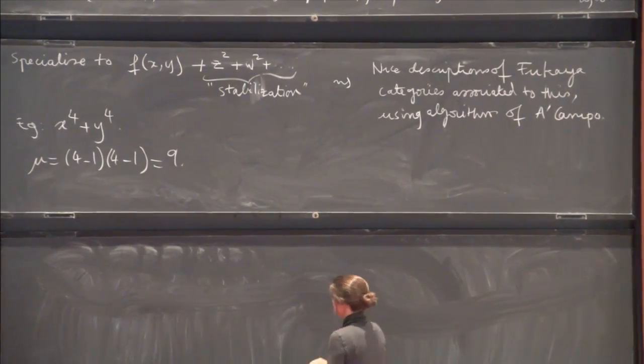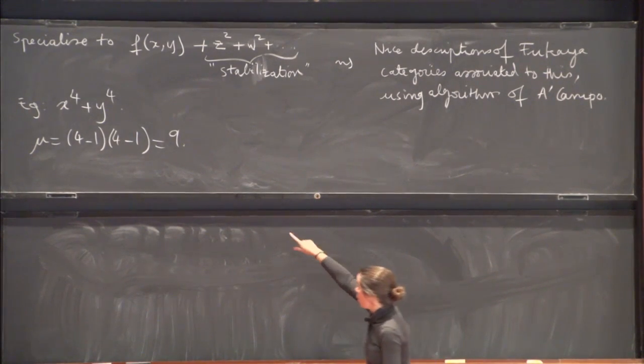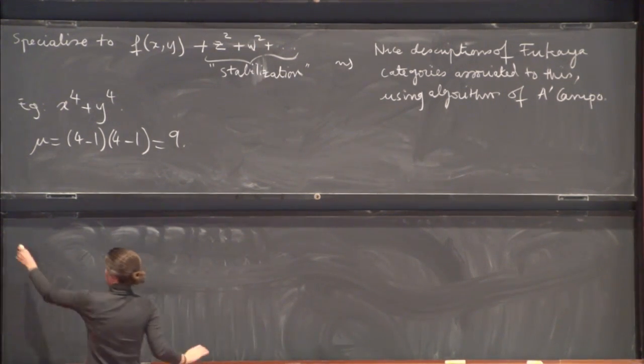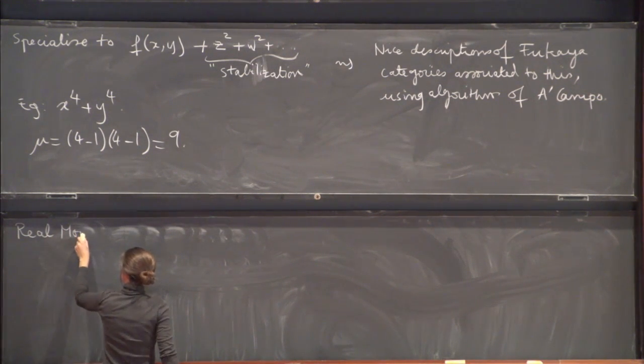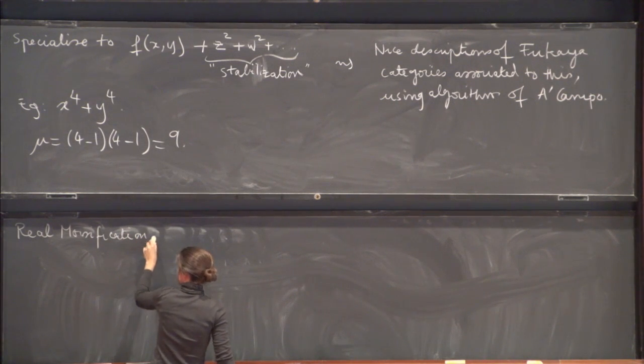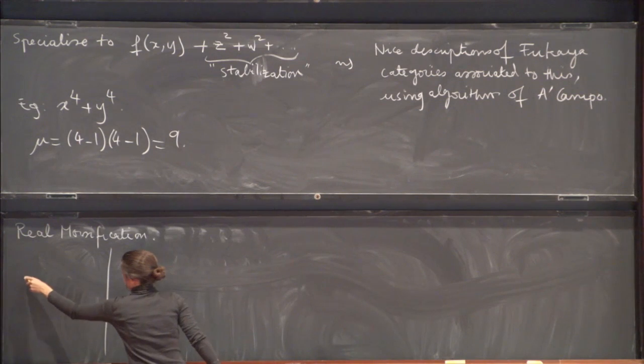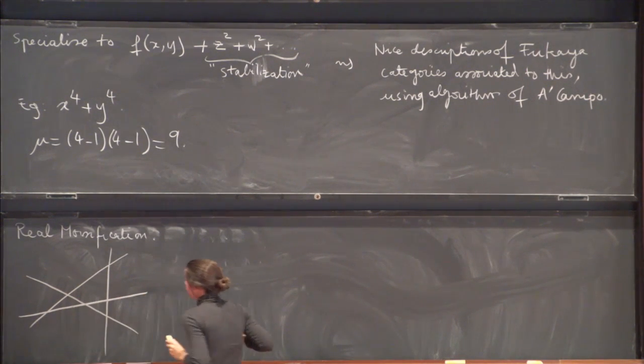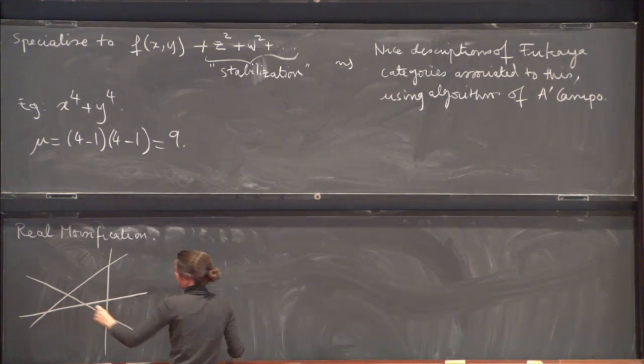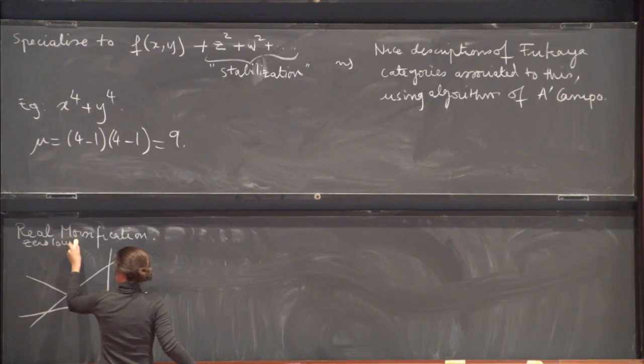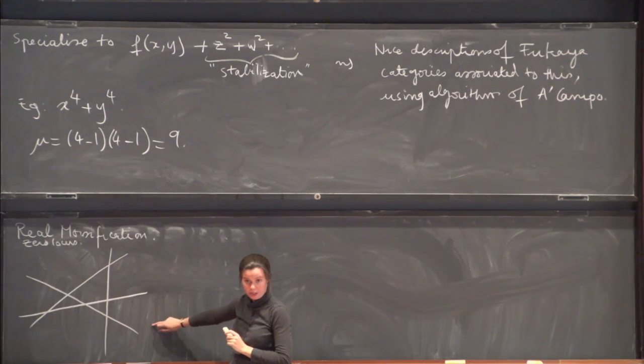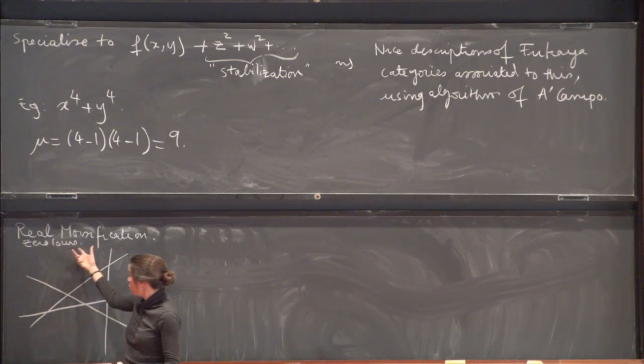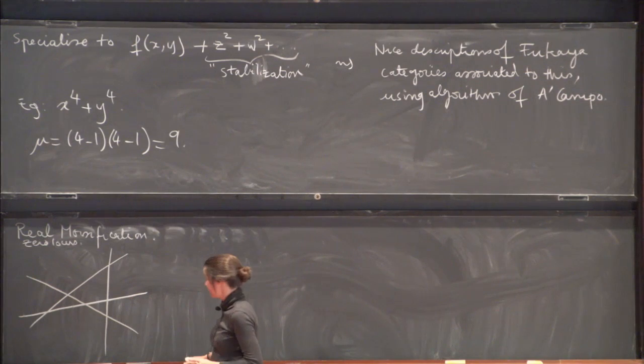So, I'm going to use the example of x4 plus y4 and notice that this is Milner number 4 minus 1 times 4 minus 1, so 9. Okay, so the input for this algorithm is you just look at a real morsification of this function. So, if you rearrange things there, what you have is a product of four lines. So, a real morsification. Well, here's an example where what I've drawn is the zero locus. And I'm thinking of this as living in the real xy plane.